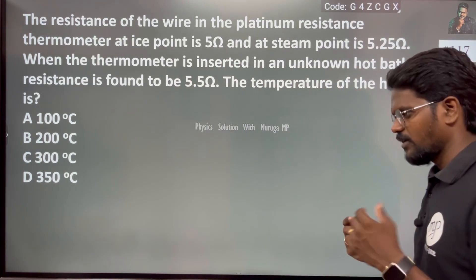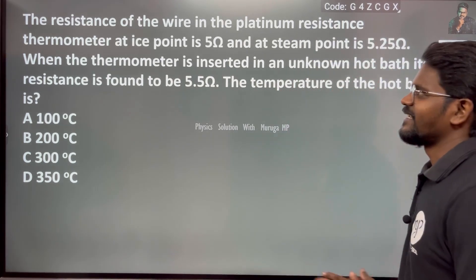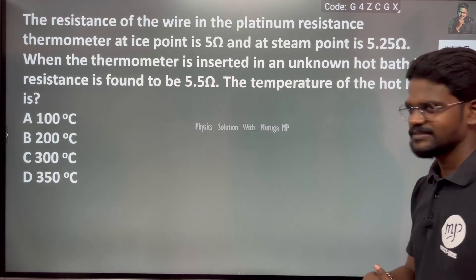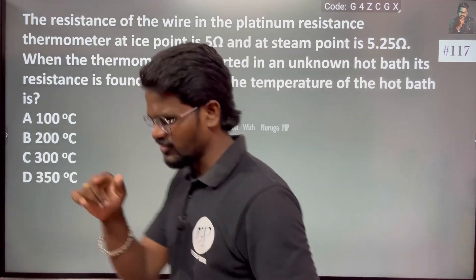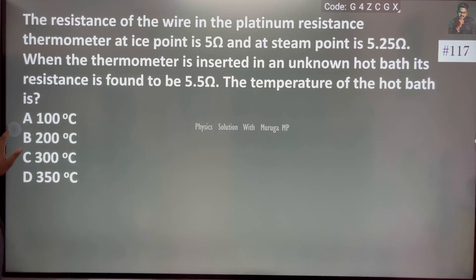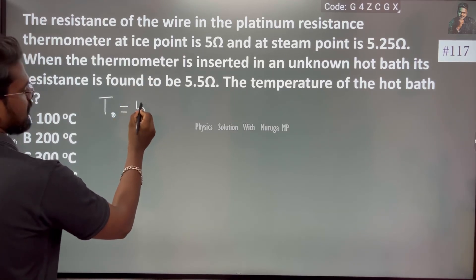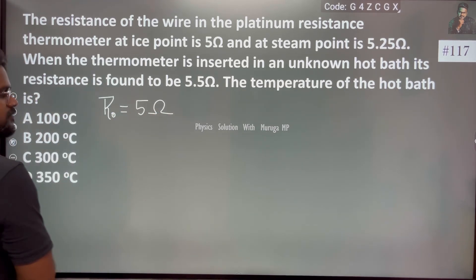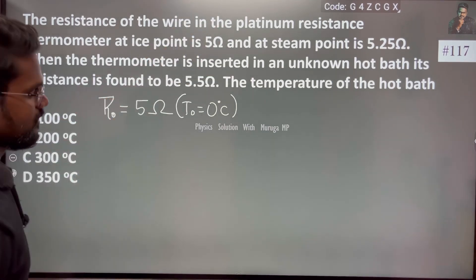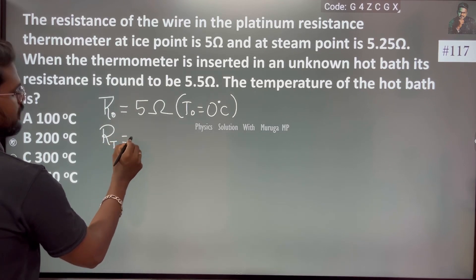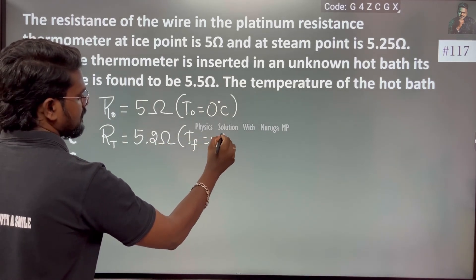The resistance of the wire in the platinum resistance thermometer at ice point (zero degrees Celsius) is R0, which is 5 ohm. The steam point is obviously 100 degrees Celsius, and at that point they have given us 5.25 ohm, so R at 100°C equals 5.25 ohm.